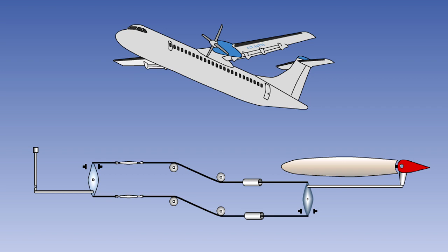In a manual system, the control surfaces are connected directly to the cockpit controls by a system of cables, rods, levers and chains.